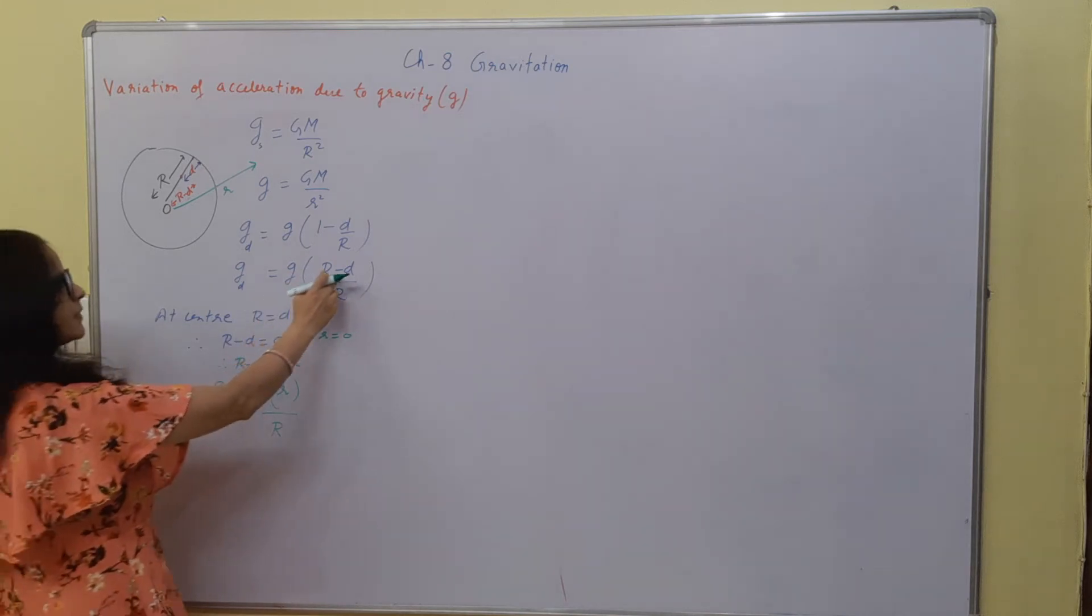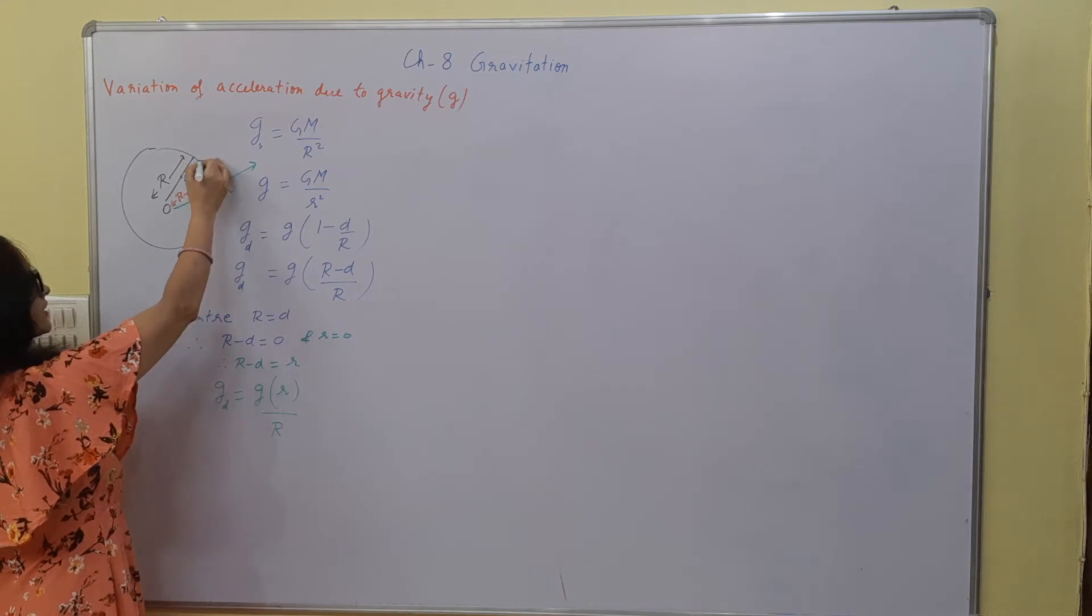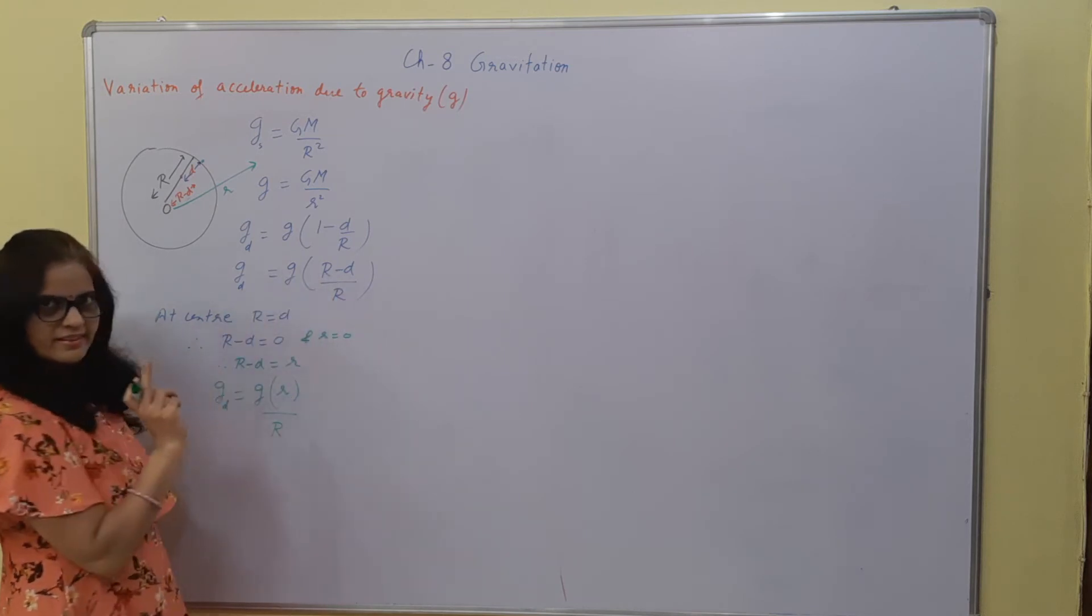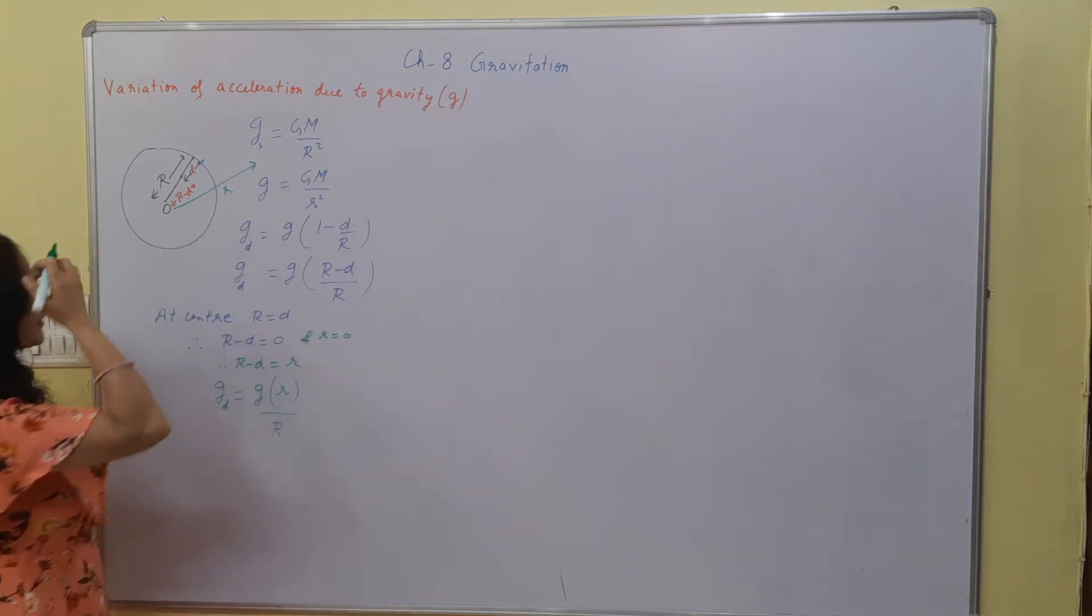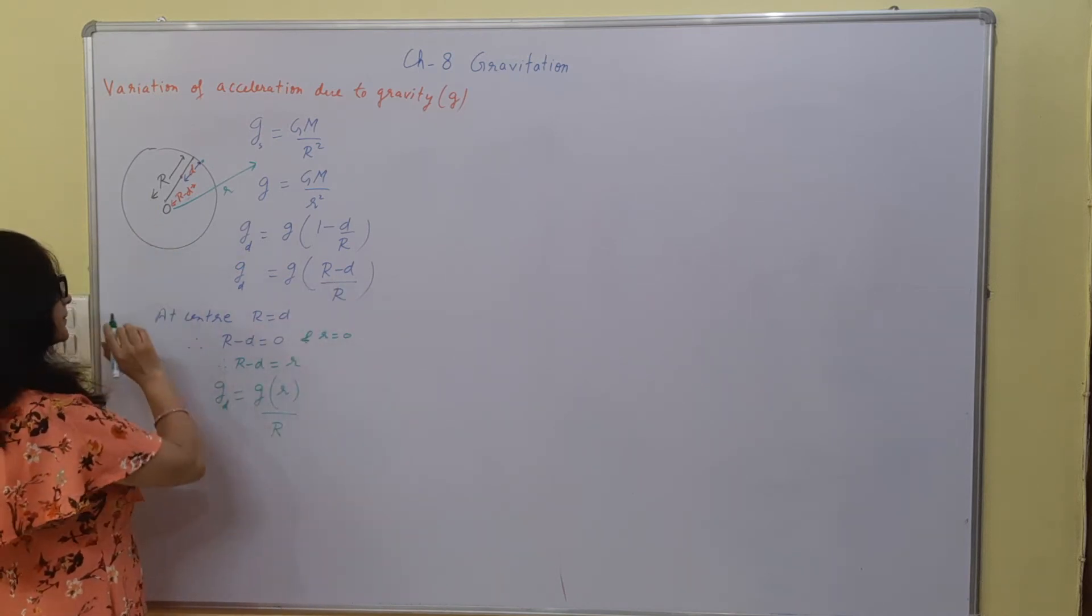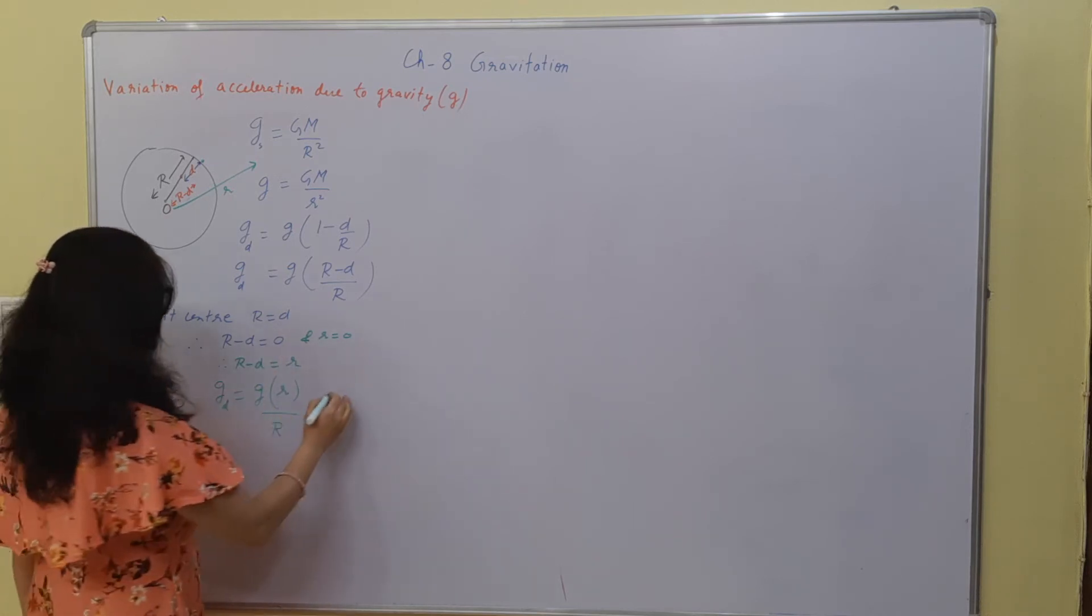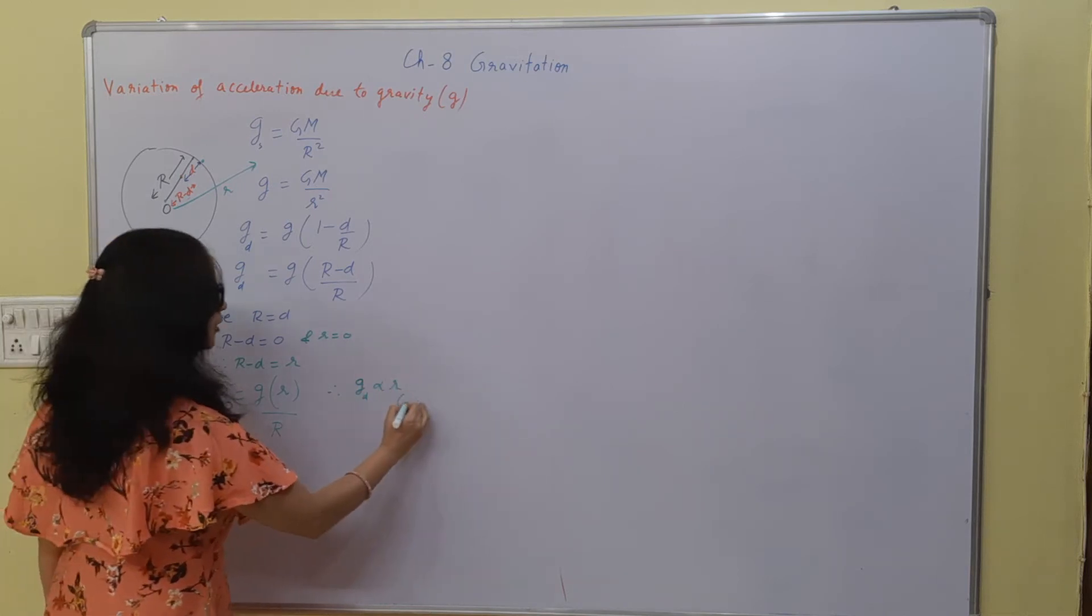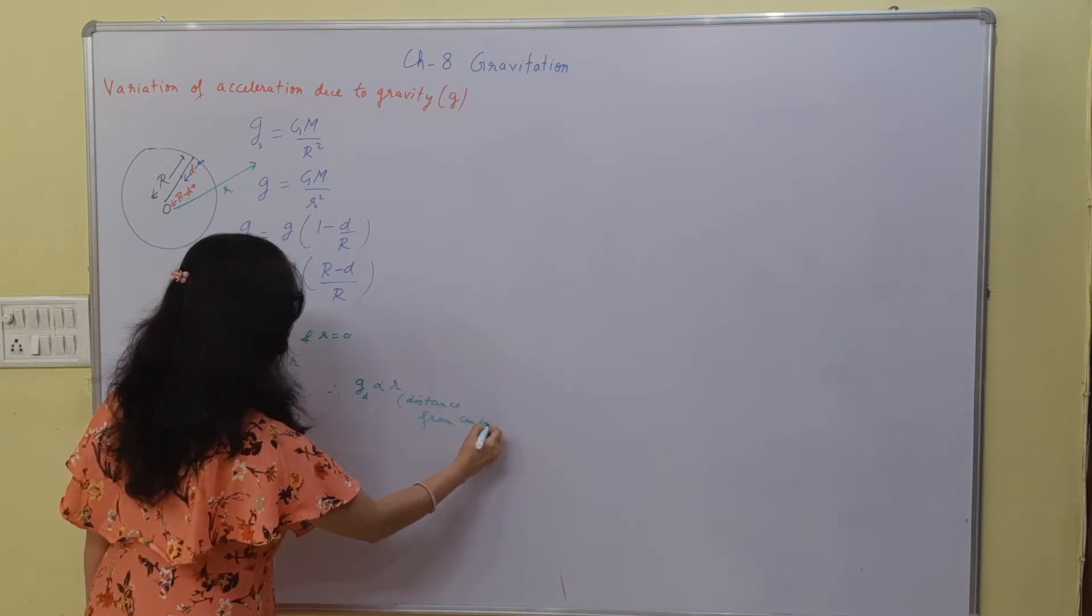Again listen. This r minus d expression is there. If I put r equals d, that means if the object goes from here to center, this total depth will equal the radius. At this center point, what will be the distance from the center? Zero. So that's why r minus d will be 0 at center. So r minus d can be considered small r if we are measuring from the center. Therefore g at depth is directly proportional to distance from center.